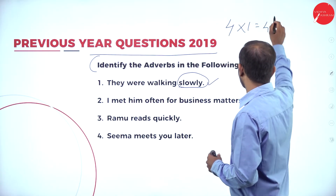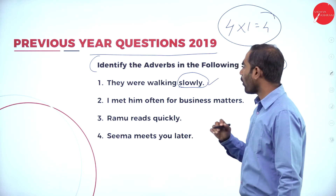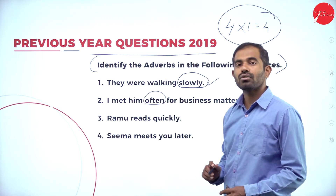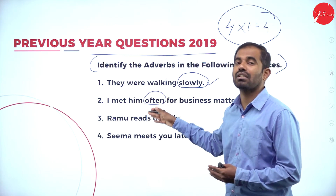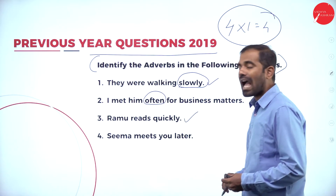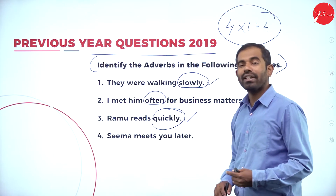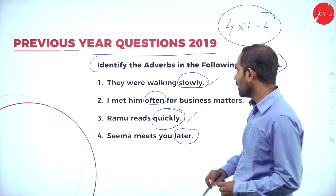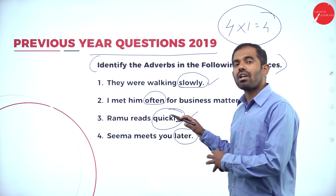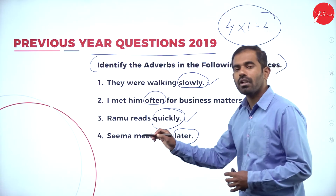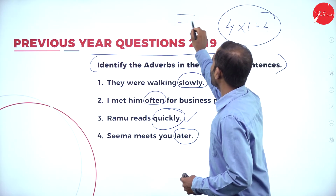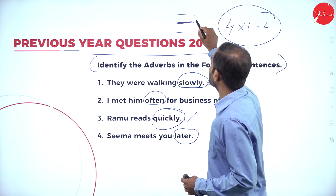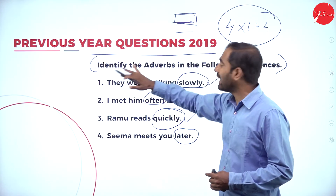Each question carries one mark and this section is asked for four marks total. 'I met him often for business matters' — often is the adverb of frequency. 'Ramu reads quickly' — quickly is the adverb of manner. 'Seema meets you later' — later is the adverb of time, meaning not now but maybe later. So we have four answers from the previous year's question paper.